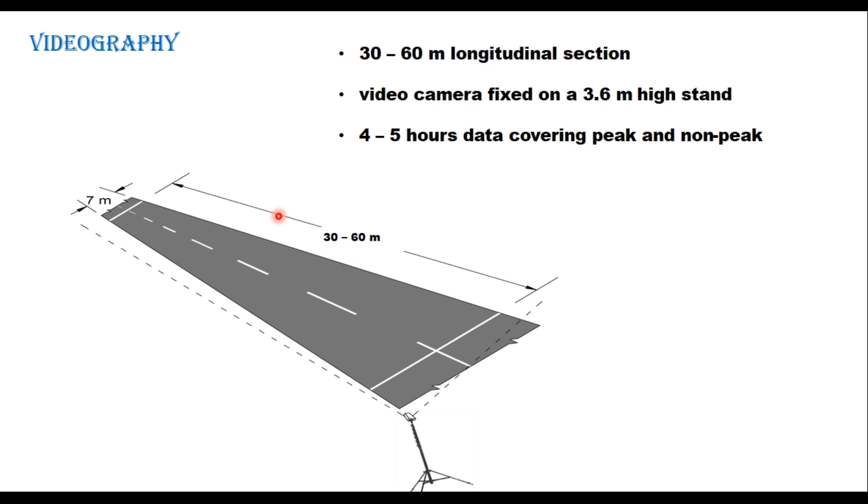This means the speed and flow is not disturbed by any external factor. Because it is not possible to cover entire 100 meter or 500 meter in a camera view, at the middle of this long section, we take a trap of 30 to 60 meter depending upon the height of the camera which is available at site.